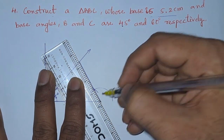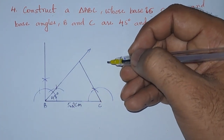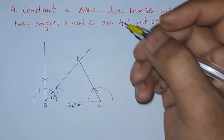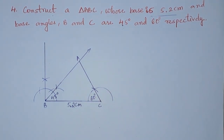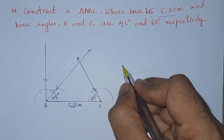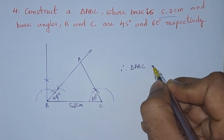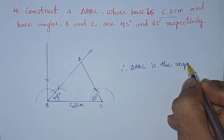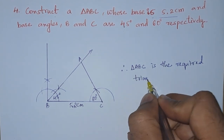Extend up to the triangle. We got the required triangle. The point where the lines intersect is A, where the angle is 60 degrees. Therefore, triangle ABC is the required triangle.